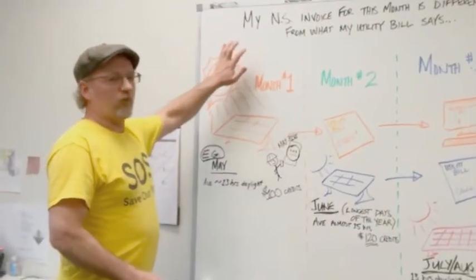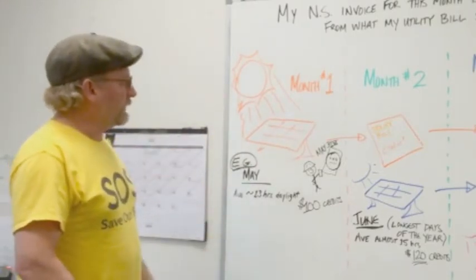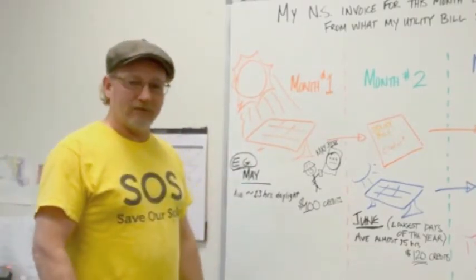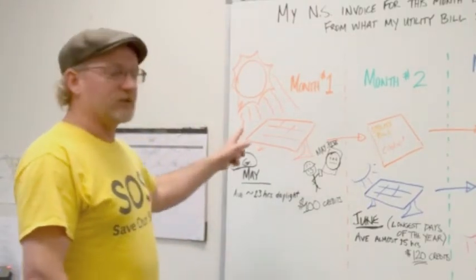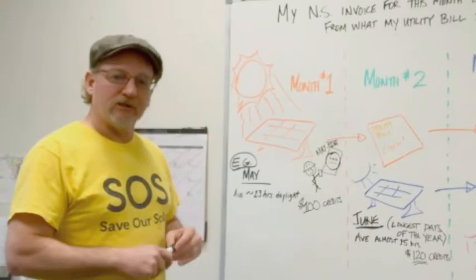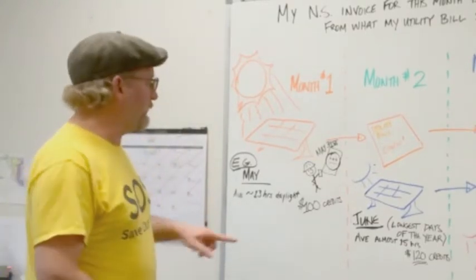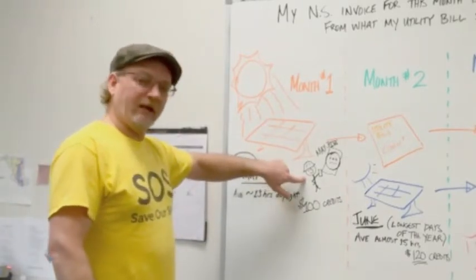In month number one, the switch gets turned on by the utility. The solar panels start collecting sunlight and generating electricity that they put onto the grid. How much electricity is being made during month number one? We don't know until the very end of the month when the utility reads the meter.